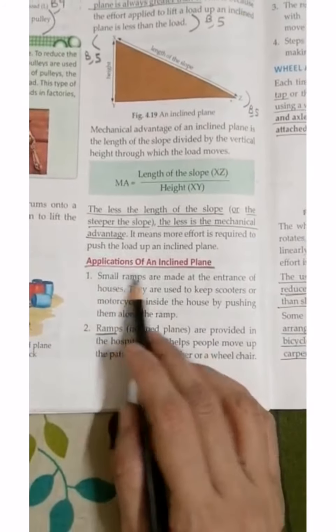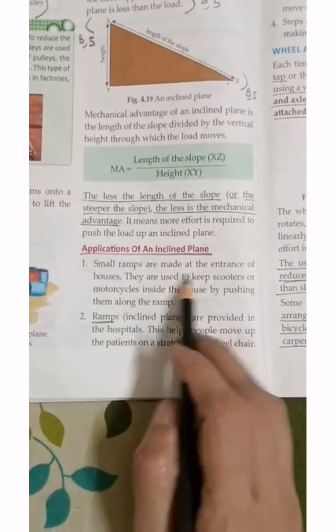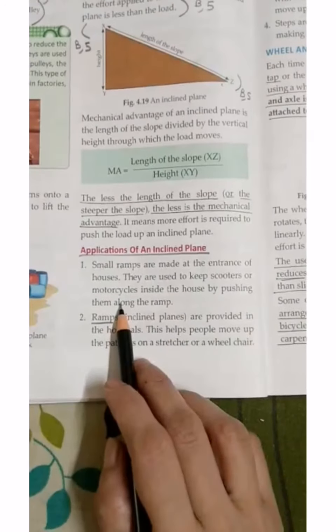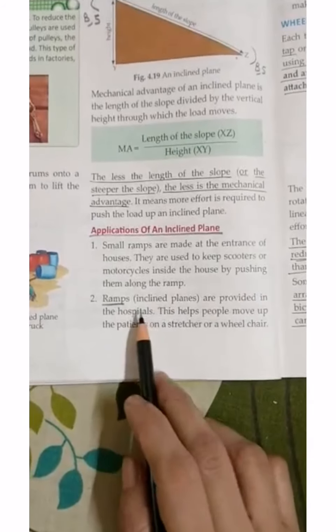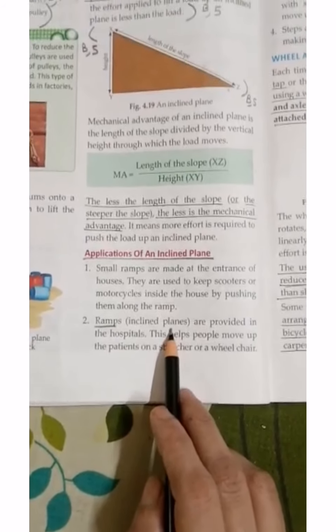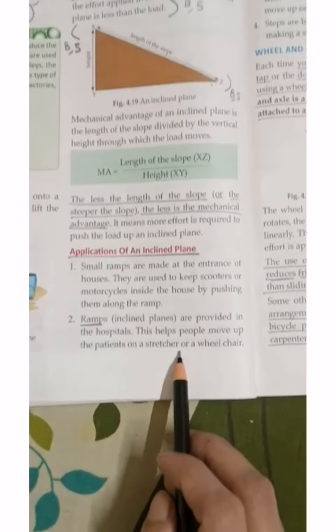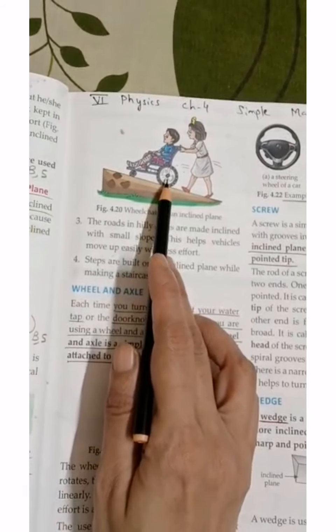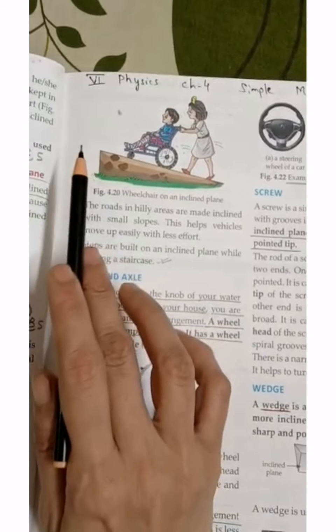Next is applications of an inclined plane. Small ramps we use in house entrances are used so that scooters and motorcycles can be pushed along the ramp. The ramp is nothing but an inclined plane, which is provided in hospitals. It also helps patients to lift up because the patient is sitting on the wheelchair and pulling the inclined plane to move upward. This helps the patient to move up.